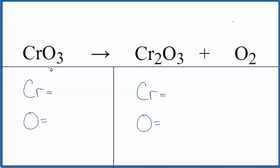To balance it, let's count the atoms up. We have one chromium and three oxygen atoms in the reactants. In the products we have two chromiums, we have three oxygens here, and we have two here. So we have a total of five oxygen atoms.